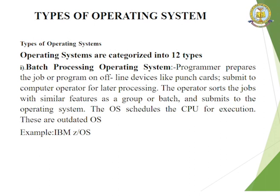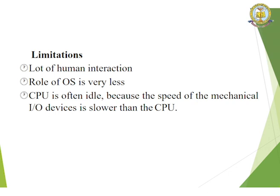Operating systems are categorized into 12 types. The first is the batch processing operating system. The programmer prepares the job on offline devices such as punch cards and submits it to the computer operator for later processing. The operator sorts jobs with similar features as a group or batch and submits it to the operating system. The operating system schedules the CPU for execution. These are outdated operating systems — an example is IBM Z/OS. Limitations include lot of human interaction, minimal OS role, and CPU being often idle because mechanical I/O devices are slower than the CPU.